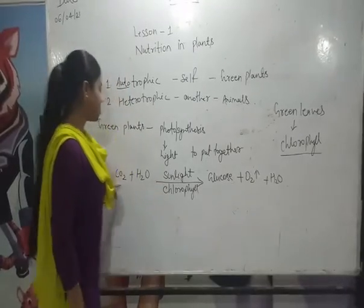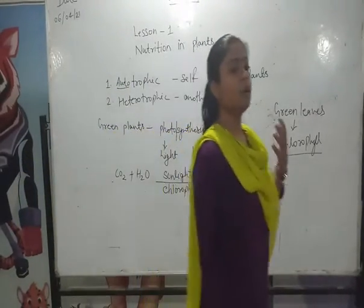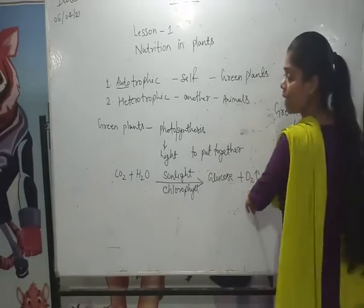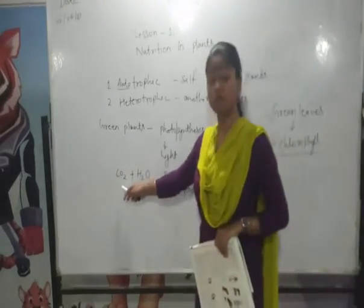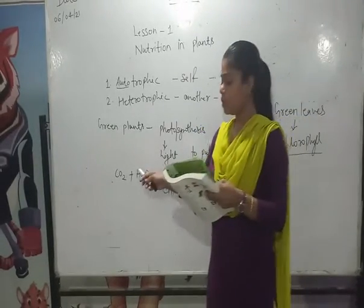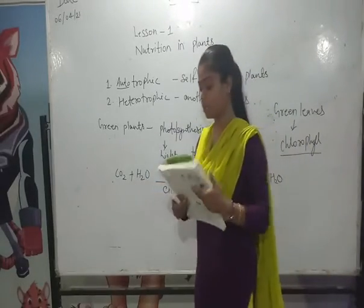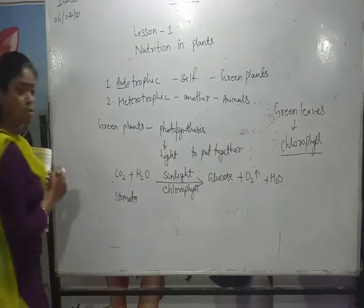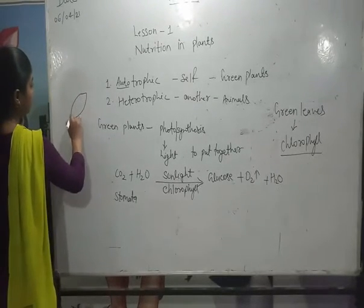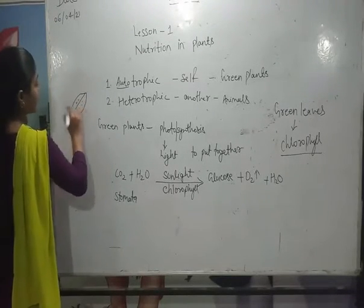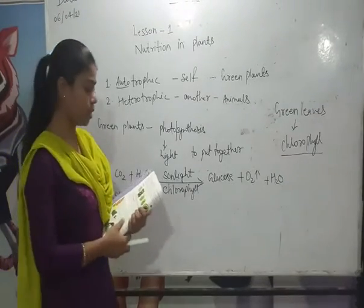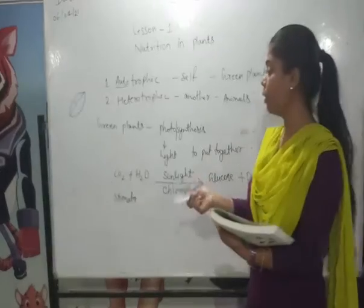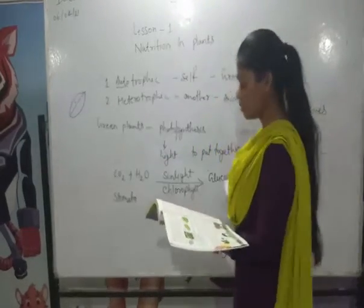Carbon dioxide is obtained from the air. All animals breathe in oxygen and breathe out carbon dioxide. So carbon dioxide goes into the leaf through the stomata. What are the stomata? These are small openings on the leaves — tiny pores that we cannot see with the naked eye but can see through a microscope. The guard cells regulate the opening and closing of stomata. This is the whole process of photosynthesis.